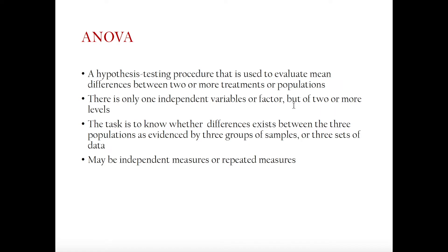It is important to note that ANOVA can accommodate situations where the independent variable has two or more levels. That means whatever problem we normally use t-test for, we can also use analysis of variance. In essence, the goal of ANOVA is to know whether differences exist between two or more populations, as evidenced by two or more sets of sample data.